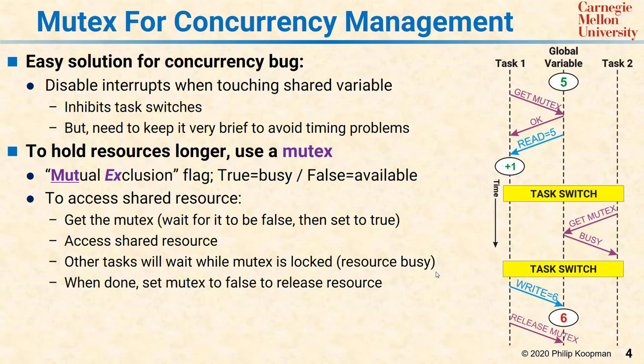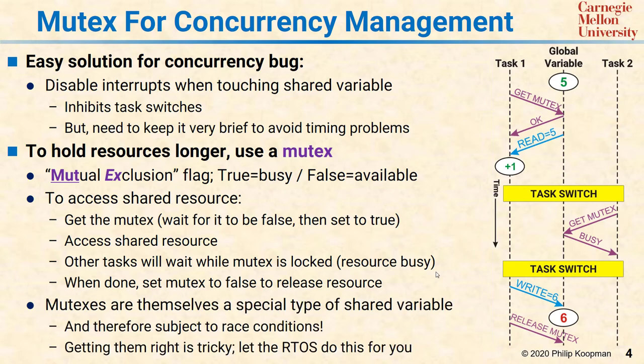Be sure to remember that mutexes themselves are also a special type of shared variable, so you have to use great care. Going back to the tradeoff: if you have a shared variable and all you're going to do is add one and put it back, you might just as well disable interrupts, add the one, write it back, re-enable interrupts. But if you're doing something complicated — like you have a large data structure — you instead use disable interrupts to set the mutex, re-enable interrupts, do whatever you want with exclusive use of the resource, and then release the mutex when done.